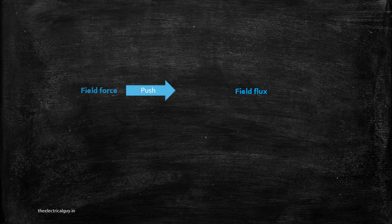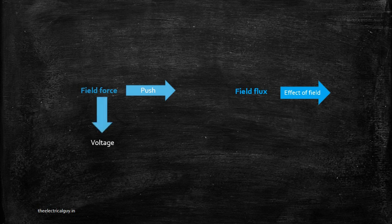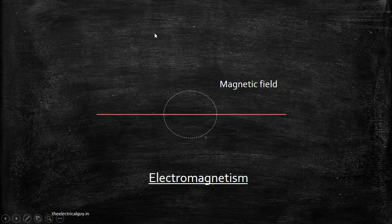This magnetic field has two main parameters: field force and field flux. Field force is the push required to move electrons from one place to another. Field flux is the effect of the field. Simply put, field force is analogous to voltage and field flux is analogous to current. These are the two main parameters that any field has, whether it is an electrical field or a magnetic field. Inductors are devices specially designed to take advantage of electromagnetism.